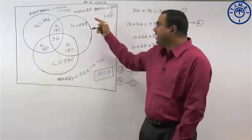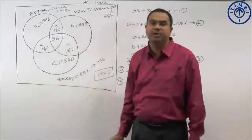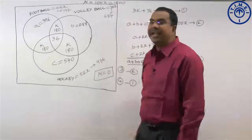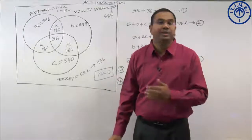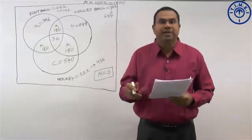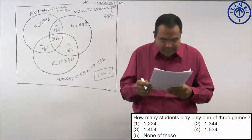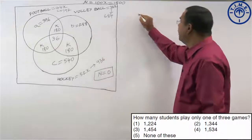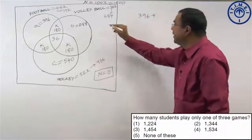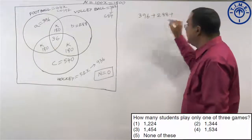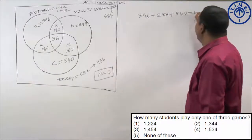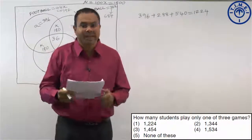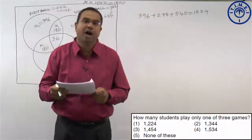Now that we have all values A, B, C, K and X, the total number of students is 100 into 18 equals 1800. Now let us solve the questions. First question: how many students play only one of the three games? Only football 396, plus only volleyball 288, plus only hockey 540 gives 1224. This is option 1.